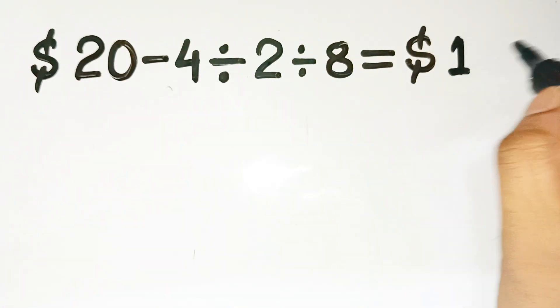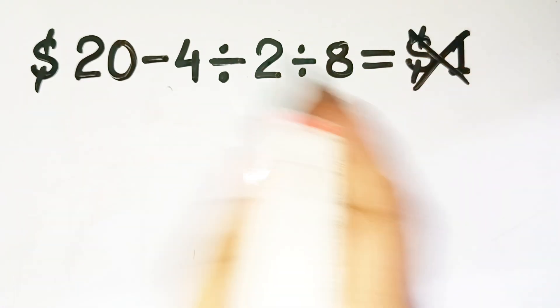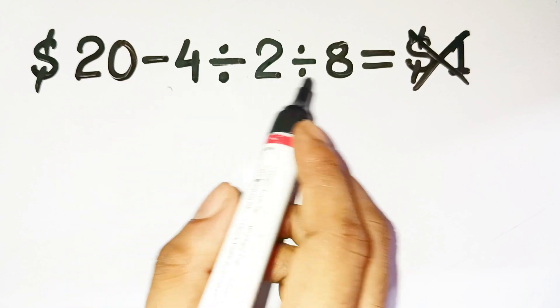You'd assume the answer is $1, but the truth is totally different. The problem looks innocent. 20 minus 4 divided by 2 divided by 8.